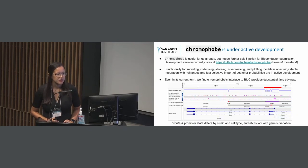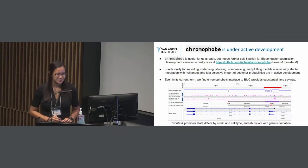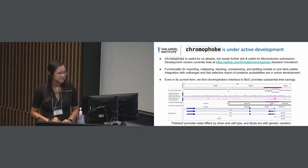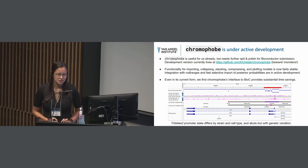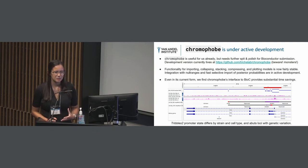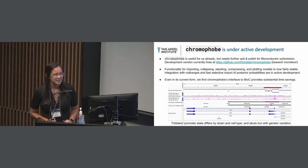In summary, we are undergoing active development for Chromophobe and want to publish it on Bioconductor. We believe it is already very useful. This plot shows how Chromophobe facilitates the analysis and visualization of ChromHMM models — for example, we can see that TLR2, which is important for dendritic cells, differs based on mouse strain and cell type. Chromophobe is able to help us make novel biological discoveries.